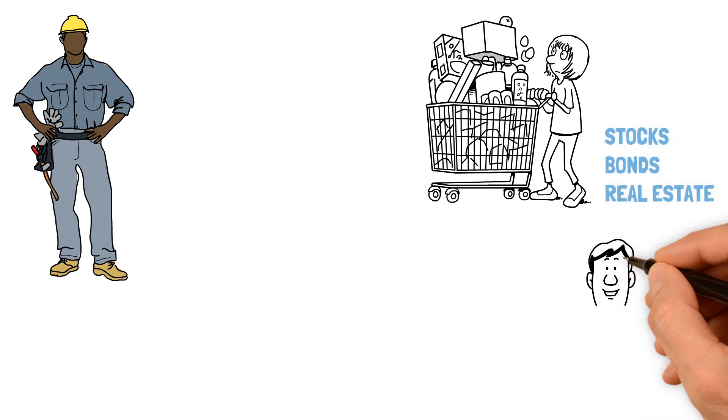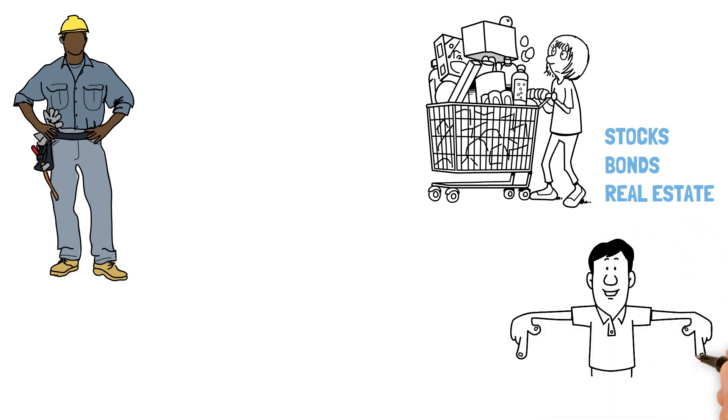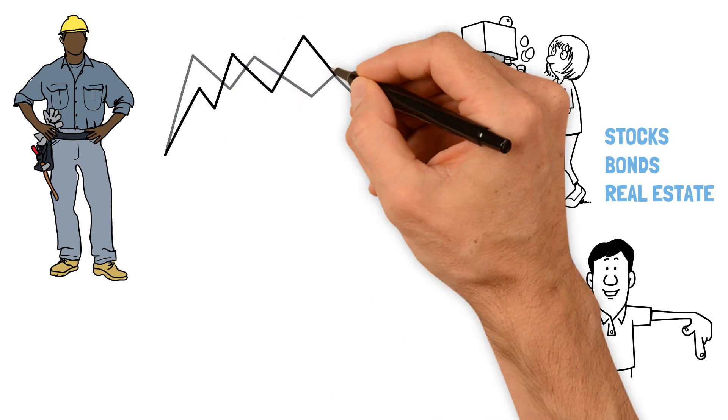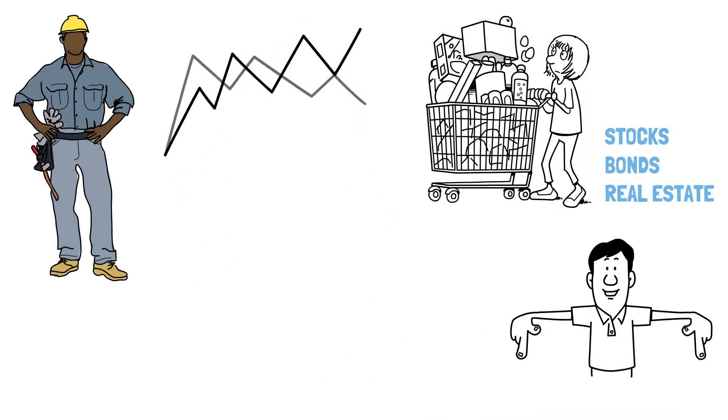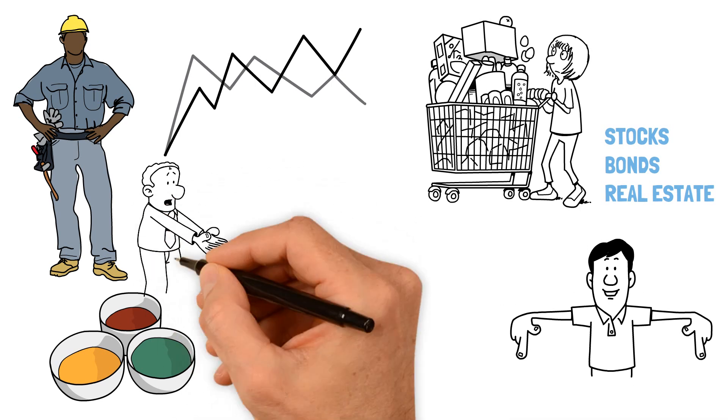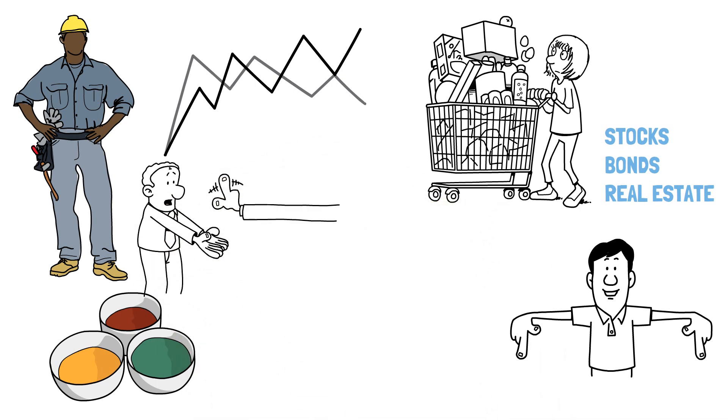The idea is to reduce risk. Each asset class can behave differently in various economic conditions. So if one investment takes a hit, others might rise or hold steady, balancing out your overall returns. It's like having a mix of ingredients in a recipe - if one flavor isn't quite right, the others can still make the dish delicious. Diversification doesn't guarantee profits or protect against losses, but it's a smart way to manage risk and build a more resilient financial future.